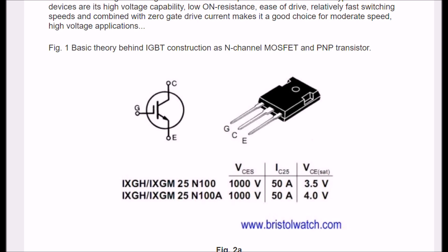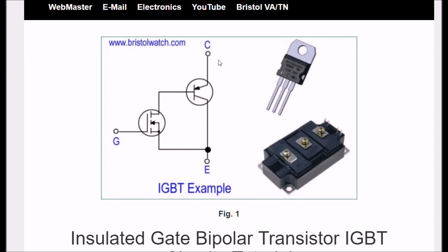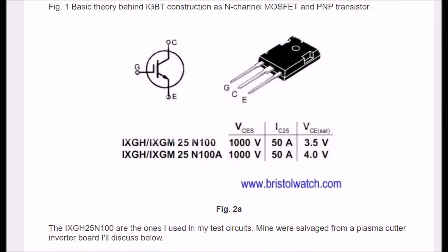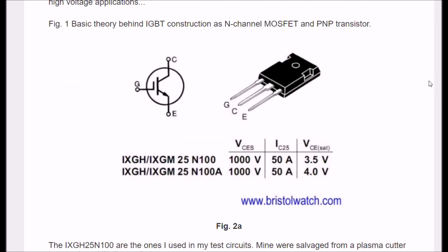Remember, if we run back to the original plate, we have a PNP transistor and a MOSFET. But you notice the emitter on the PNP transistor becomes the collector. Its collector becomes the emitter. And of course, the MOSFET input becomes the gate. The particular ones in my test circuit I used was the IXGH25N100. These I had left over from when I was working on plasma cutter chopper boards around 1998, approximately.